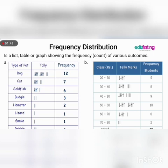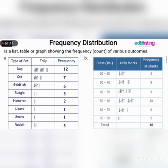We have types of pets: dog — 12 houses are keeping dogs as a pet; cats — 7 houses; catfish — 6 houses; Buggy — 3 houses; hamster — 2 houses; lizard — 1 house; snake — 1 house; rabbit — 3 houses.